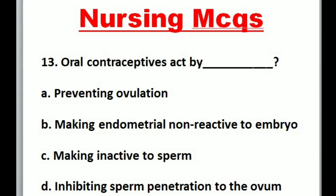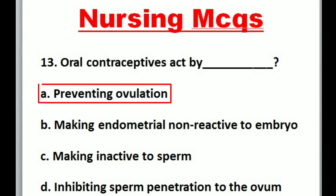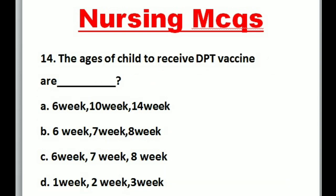Question 13: Oral contraceptives act by — A. Preventing ovulation, B. Making endometrium non-reactive to embryo, C. Making inactive to sperm, D. Inhibiting sperm penetration to the ovum. Correct option is A: Preventing ovulation.